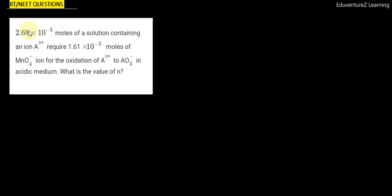Hello everyone, question diya gaya hai: 2.68 x 10 to the power minus 3 moles of solution containing an iron An+ require 1.61 x 10 to the power minus 3 moles of MnO4- for the oxidation of An+ to AnO3- in acidic medium. What is the value of N? N ka value kya hooga?